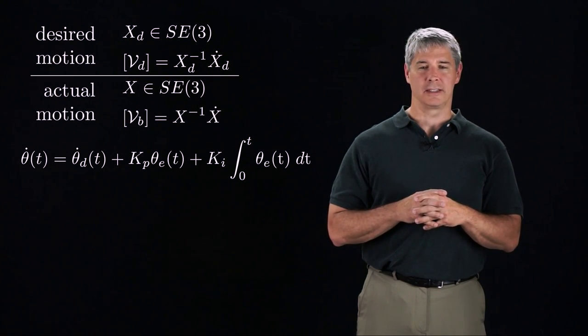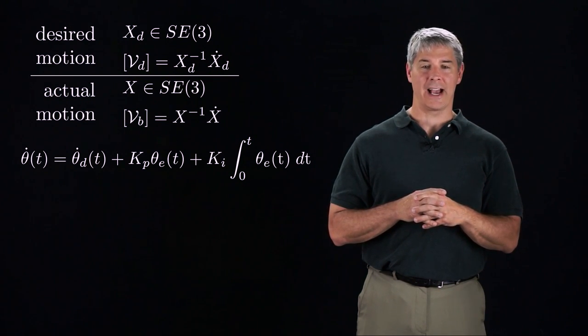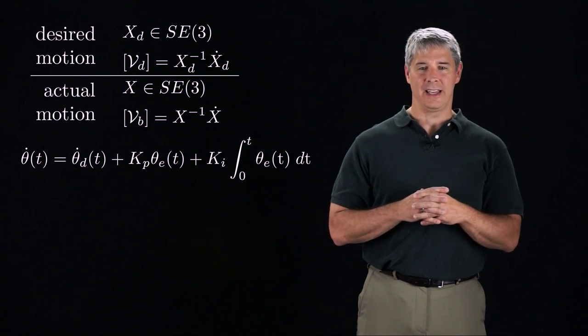Similarly, the actual motion is defined by the actual configuration X as a function of time, and Vb, the end effector twist expressed in the end effector frame.